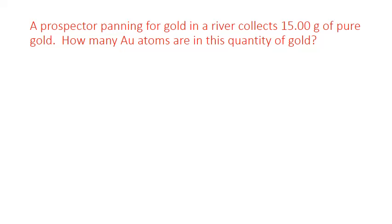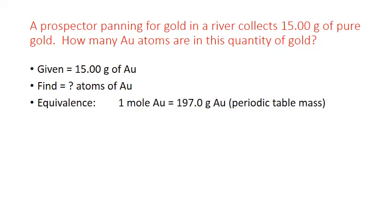Now let's add in a conversion to atoms. Here's our next problem. A prospector panning for gold in a river collects 15 grams of pure gold. How many gold atoms are in this quantity? Our starting point will be our given amount of gold, 15 grams. And we're trying to find atoms of gold this time. So we still need to use the equivalence between moles and grams from the periodic table. But it doesn't take us quite far enough. We also will need to convert from moles to atoms by using the Avogadro's equivalence. One mole equals 6.022 times 10 to the 23rd atoms. The only time that we ever really need to use Avogadro's number is when we're converting into or out of atoms or molecules.